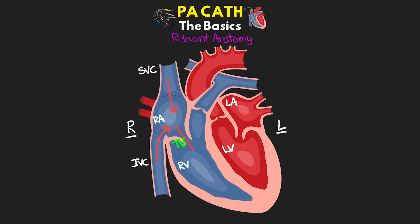From the right atrium, blood moves through the tricuspid valve into the right ventricle. The right ventricle then contracts, ejecting blood through the pulmonic valve into the pulmonary artery, on its way to the lungs to receive oxygen. The pulmonary veins return oxygenated blood to the left atrium. Blood passes through the mitral valve into the left ventricle, which ejects blood through the aortic valve into the aorta and on to the rest of the body.